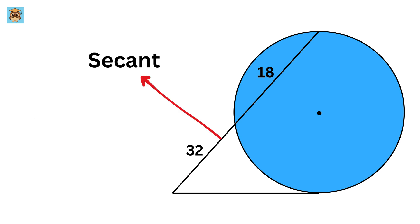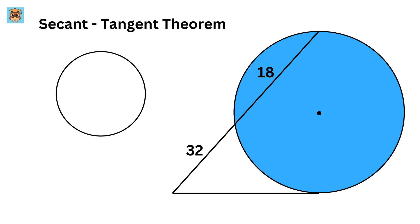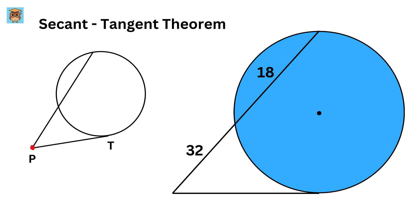This line is a secant line of this circle. We can use the tangent-secant theorem, which means if we have this circle and an external point P somewhere here, we draw a tangent line which touches the circle at point T, and then we draw a secant line which cuts the circle at points A and B.